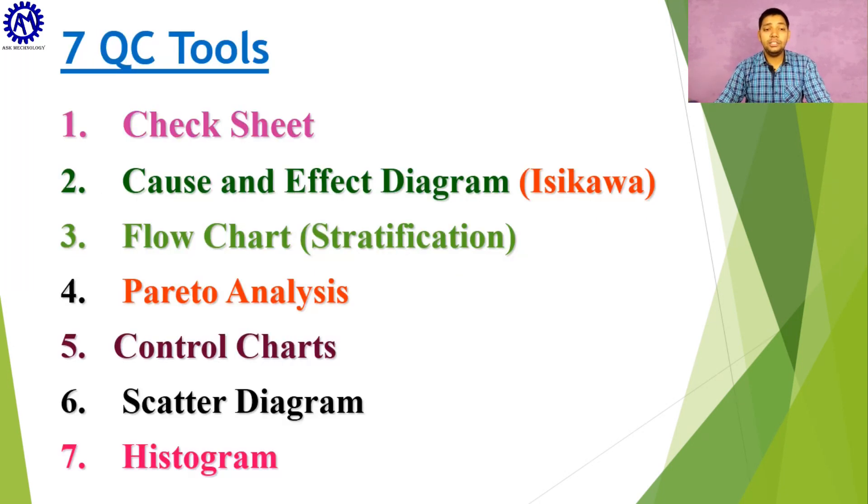These are the 7 QC tools: first is check sheet, then cause and effect diagram or Ishikawa, then flowchart or stratification, then Pareto analysis, then control chart, then scatter diagram, and then histogram.